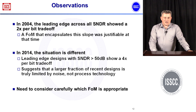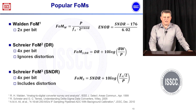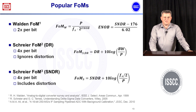How does this relate to the figures of merit used today? The Walden figure of merit encodes the old 2× per bit trade-off: it takes power divided by sample rate times 2 to the effective number of bits. More recent figures of merit — the Schreier figure of merit in dynamic range and the Schreier figure of merit in SNDR — take a 4× per bit trade-off. References that first defined these metrics are listed below.